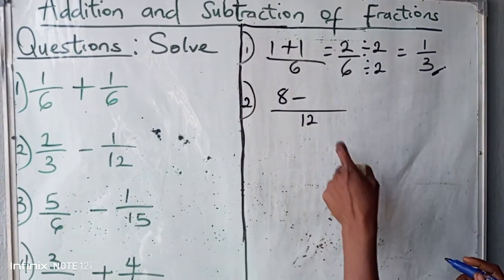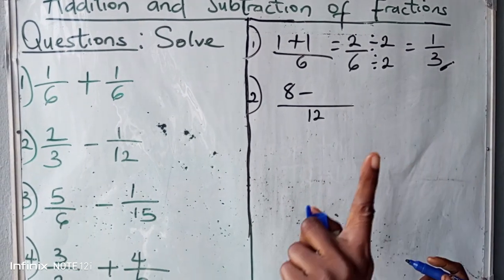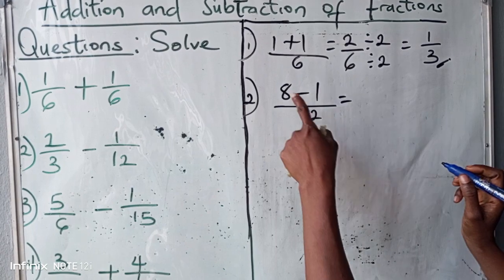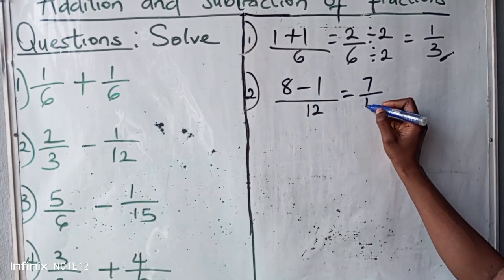Twelve into twelve. That means twelve times what will give you twelve? One. One times one, one. It will give us eight minus one, we have seven all over twelve.